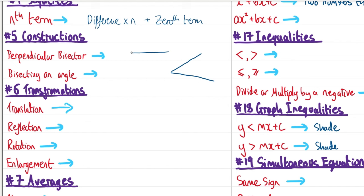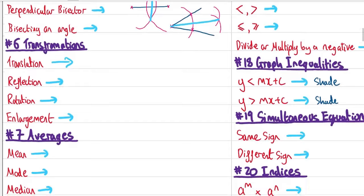Next up: constructions. We need a compass — put the needle point here and draw a semicircle. Then put the needle on the other side without changing the distance and draw another semicircle. Connect up the two intersection points and that gives us our perpendicular bisector. To bisect an angle, put the needle at the vertex, draw an arc to get two points, draw arcs from each point, and connect the centre of the angle with that intersection to bisect it.